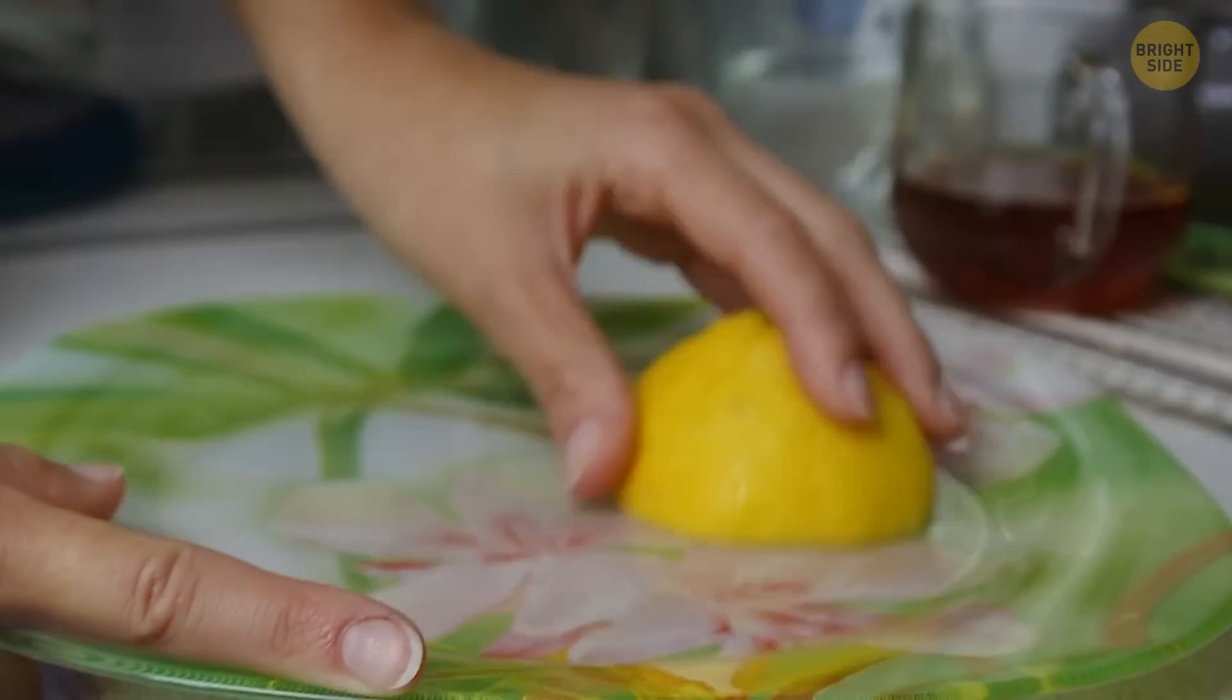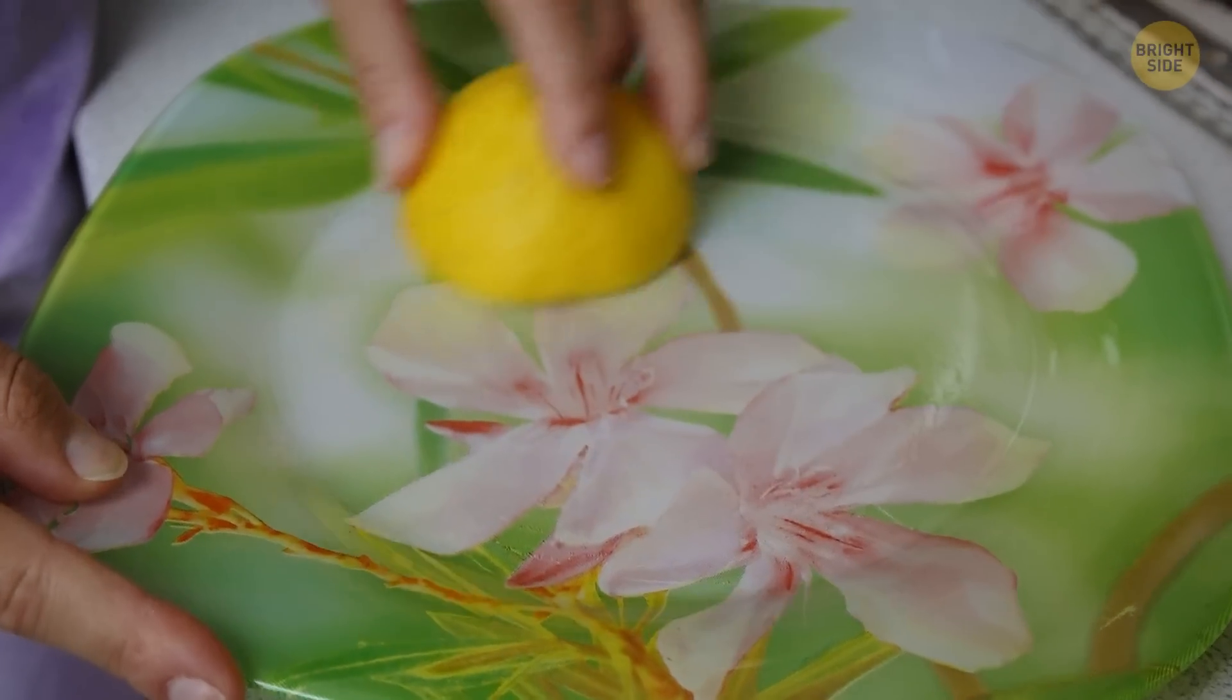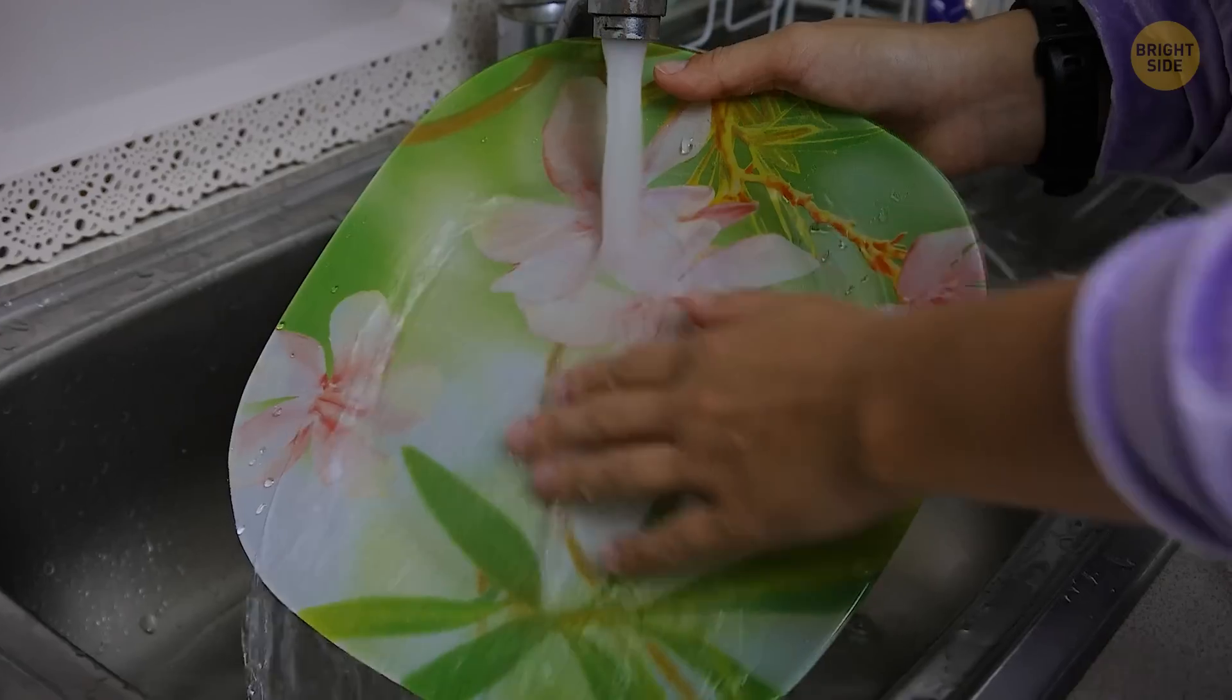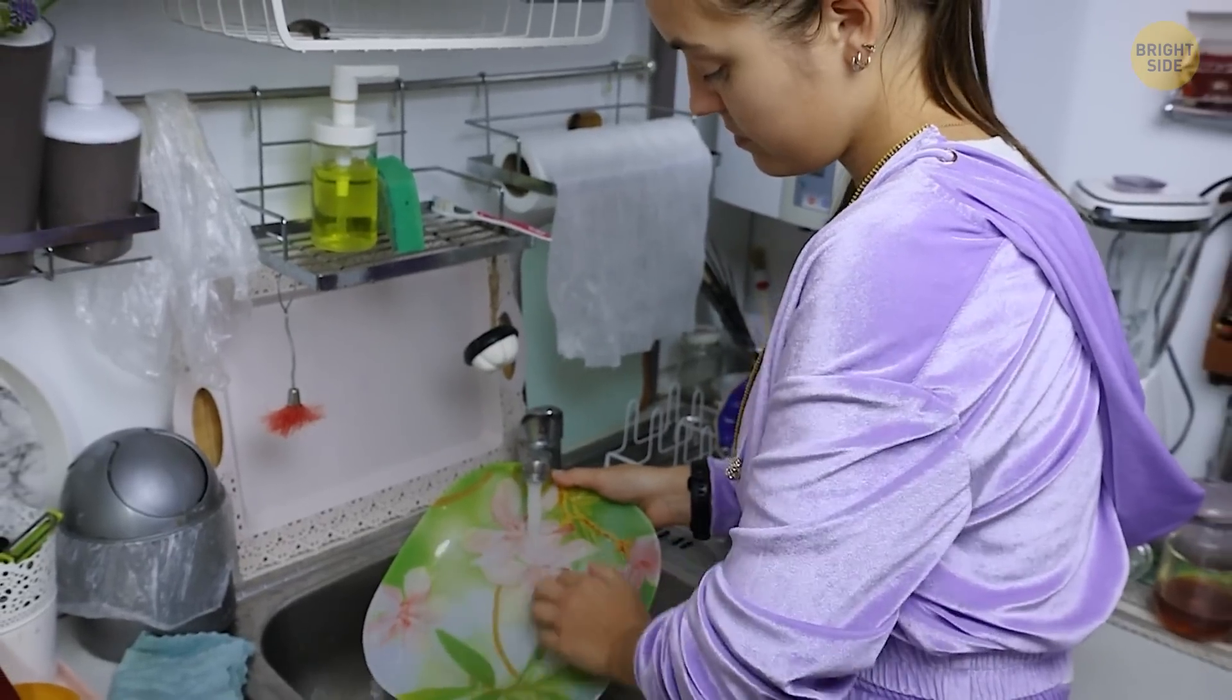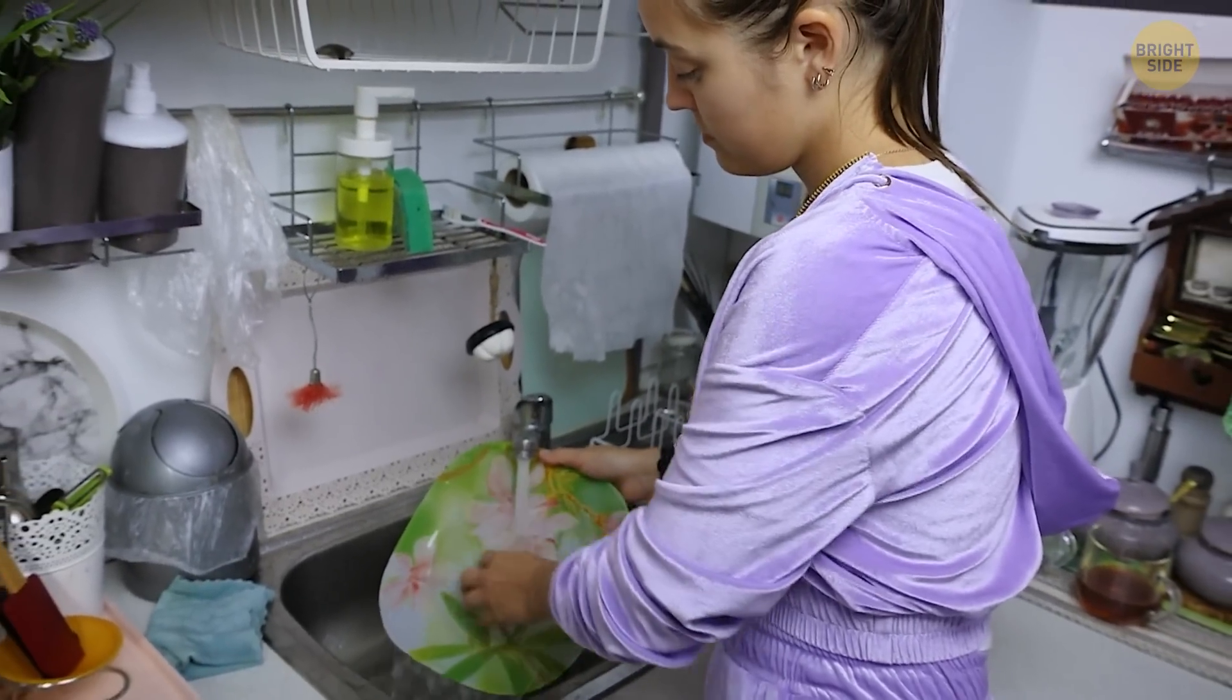Running half a lemon down the side of a cheese grater will effectively remove sticky food particles. Just remember to wash with water afterward. This ensures a more effective cleanse and keeps your fingers safe from being cut.